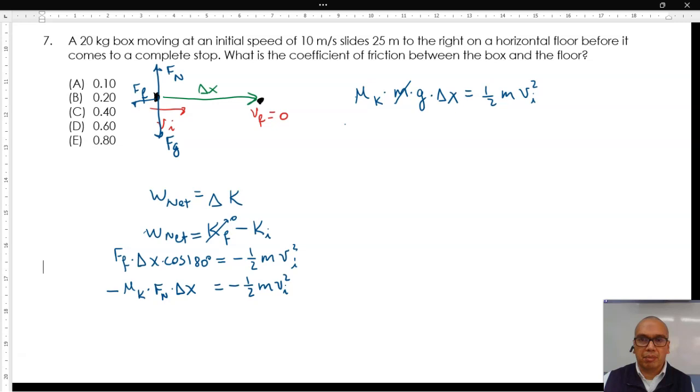We cancel the mass out, and we have coefficient of friction equal to the square of the initial speed divided by two times g times displacement. This is equal to 10 meters per second squared divided by two times 10 meters per second squared times 25 meters.